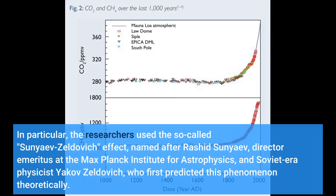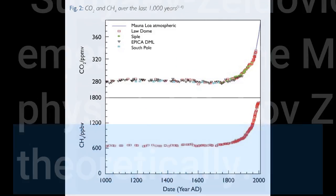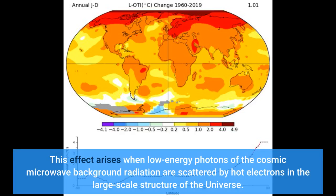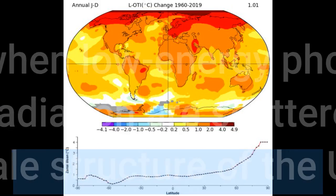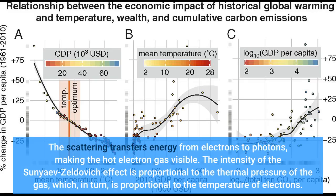In particular, the researchers used the so-called Sunyaev-Zel'dovich effect, named after Rashid Sunyaev, director emeritus at the Max Planck Institute for Astrophysics, and Soviet-era physicist Yakov Zel'dovich, who first predicted this phenomenon theoretically. This effect arises when low-energy photons of the cosmic microwave background radiation are scattered by hot electrons in the large-scale structure of the universe. The scattering transfers energy from electrons to photons, making the hot electron gas visible. The intensity of the Sunyaev-Zel'dovich effect is proportional to the thermal pressure of the gas, which in turn is proportional to the temperature of electrons.